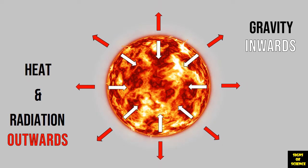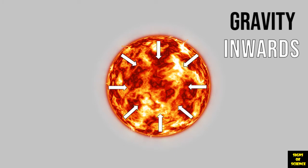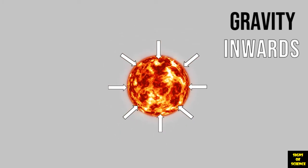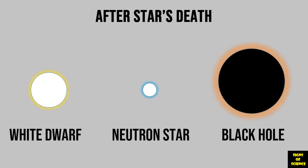First, the fusion reactions will stop and so will the outward forces generated by it. Now, gravity being the dominant force left will start compressing the mass of the star in a very small volume of space forming either a white dwarf, neutron star or a black hole depending on the initial mass of the star.